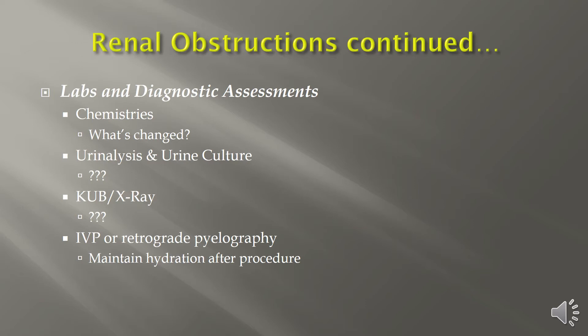An IVP, or intravenous pyelogram, is done to look for problems with the structure of the urinary tract specifically. It will help find any cause of blood in the urine and provides an in-depth look at the entire anatomy of the kidneys and renal system. It is a key diagnostic procedure for stones.